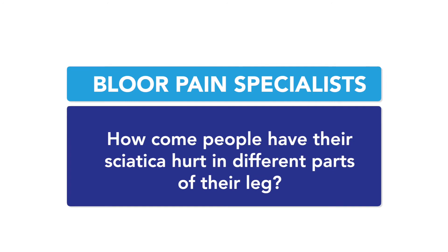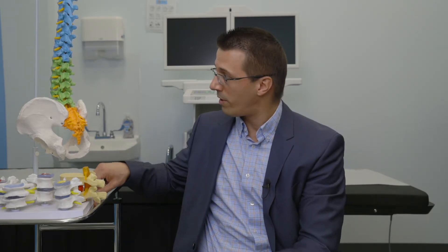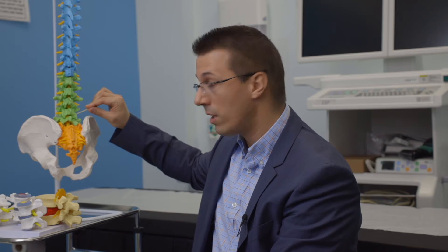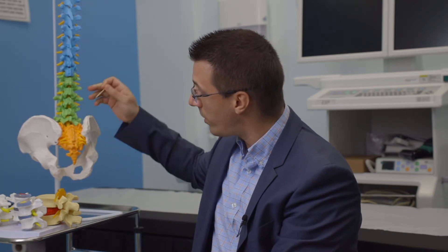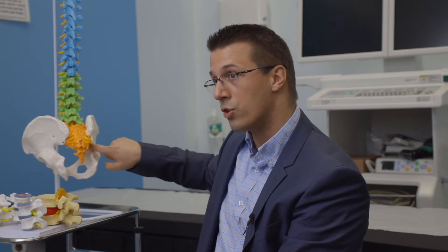How come people have their sciatica hurt in different parts of their body? Well, that's a great question and actually a very applicable one. If you think about the sciatic nerve causing pain from five different routes — you have L4, L5, S1, S2, and S3 — the five of them come together through the sciatic notch and combine into the sciatic nerve.